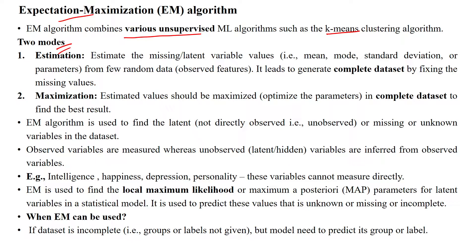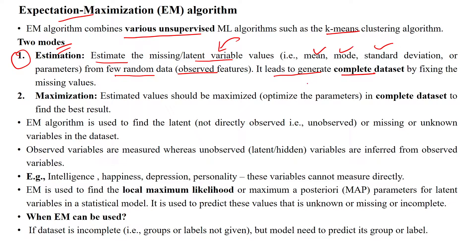The EM algorithm has two steps. The first one is the estimation step. Here we estimate the latent variable values using mean, mode, standard deviation, or parameters from a few random data points — that means from the observed features. It estimates the values for latent variables or missing values, then generates the complete data set.